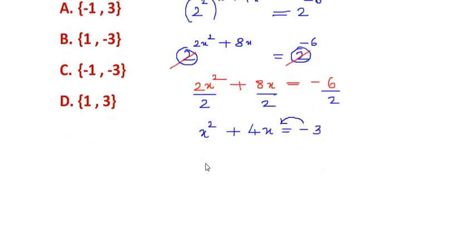Taking negative 3 on this side, we get x² + 4x + 3 equals 0.